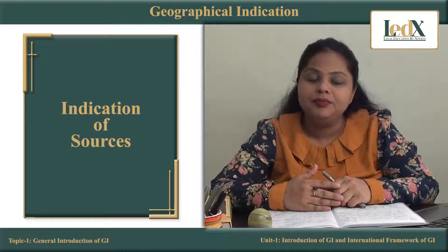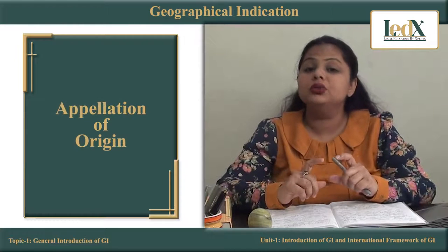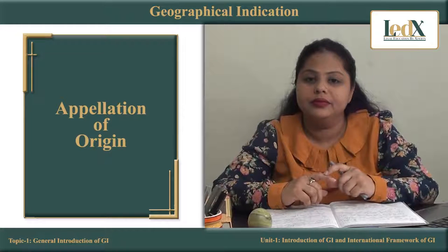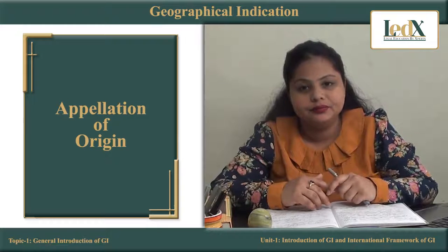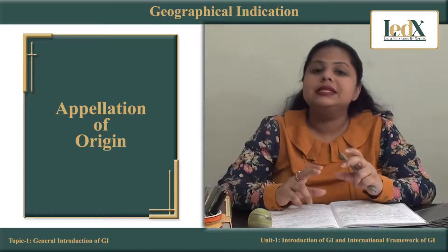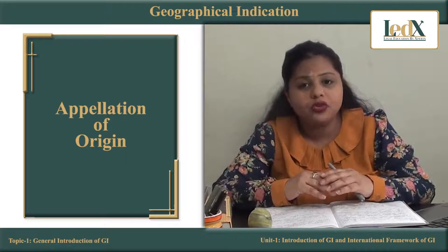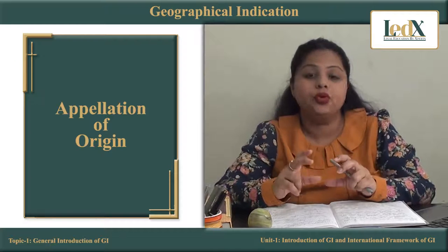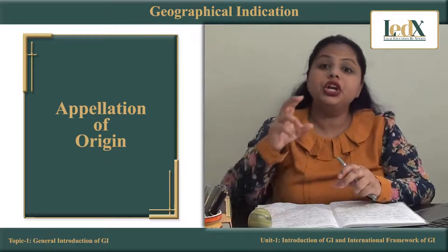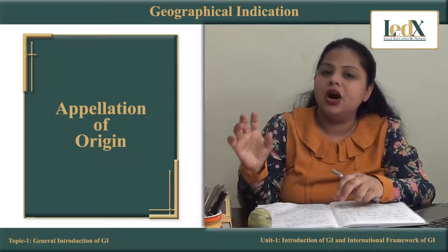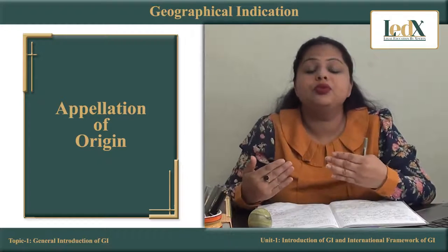Now we will discuss the second term, which is called appellation of origin. Appellation of origin is also a kind of geographical indication. This existed prior to the coming of this new concept called GI. These appellations of origin sometimes include a geographical name, sometimes traditional logos or traditional designs which are used on products, having special or specific unique attributes which are due to that particular geographical area or region from where the product is coming, processed, or produced.